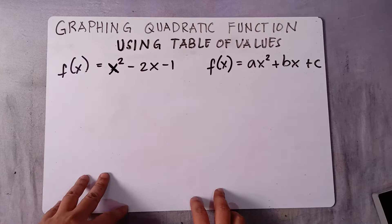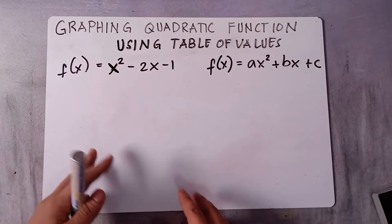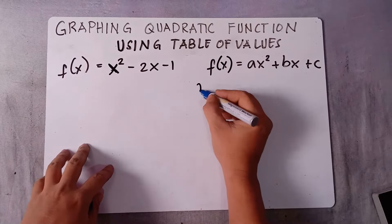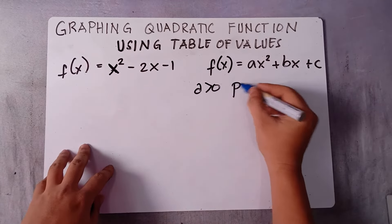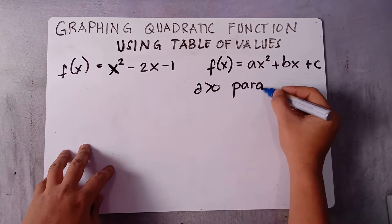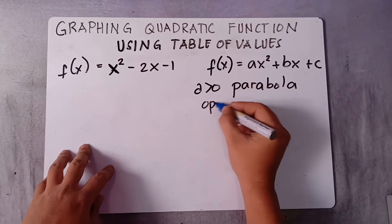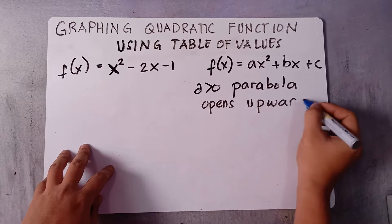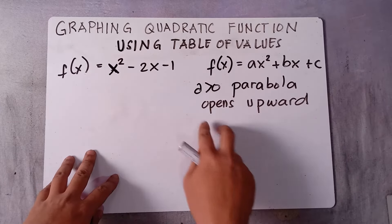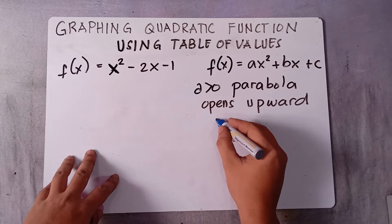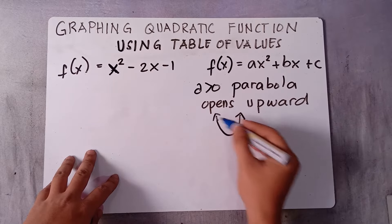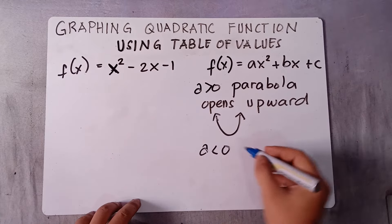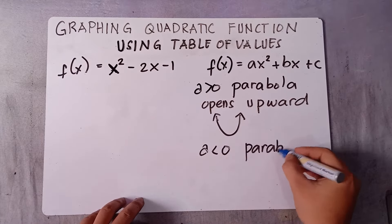Before that, we need to know first if our graph opens upward or downward. If a is greater than 0, the parabola opens upward. If a is less than 0, the parabola opens downward.